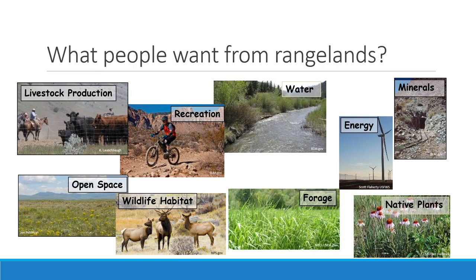What do people want from rangelands? These are the major resources we would manage for. Certainly livestock production — historically that's what rangelands were used for — is still very important. More and more we see increasing recreation on rangelands. Water is always important; rangelands are fairly arid ecosystems, but the snow that melts from high elevations flows through rangelands to lower-elevation croplands. There's growing interest in sustainable energy — because rangelands have wind and minimal trees, they're good locations for solar and wind power. Minerals have historically been important as well.